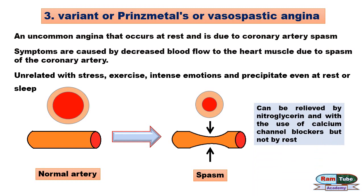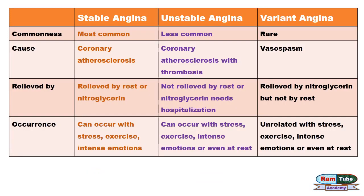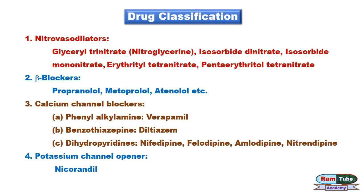Variant angina can be relieved by nitroglycerin and with the use of calcium channel blockers, but not by rest. I have prepared a table to distinguish between all three types of angina — just go through it. Now let's see what drugs are useful in the treatment of angina.